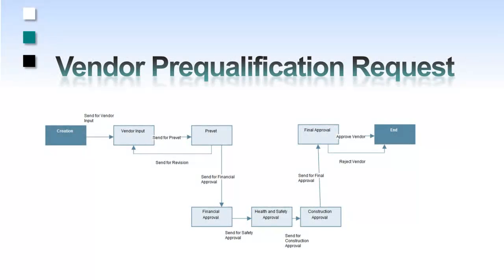Here we will be using a sequential approval vendor prequalification request. We will start at the vendor input form with the vendor information already inputted and proceed through the approval process. Information on each of the financial, health and safety, and construction approval forms will be confidential to those forms.